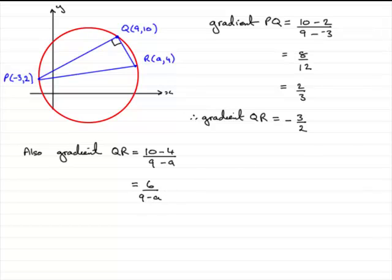So if I call this equation 1 and this equation 2, we've got two versions for the gradient of QR. So they must be equal. So what I can do is equate 1 with 2. So we just put this down here, equate 1 with 2. And so what do we have? Well therefore we have 6 over 9 minus a must equal minus 3 over 2.